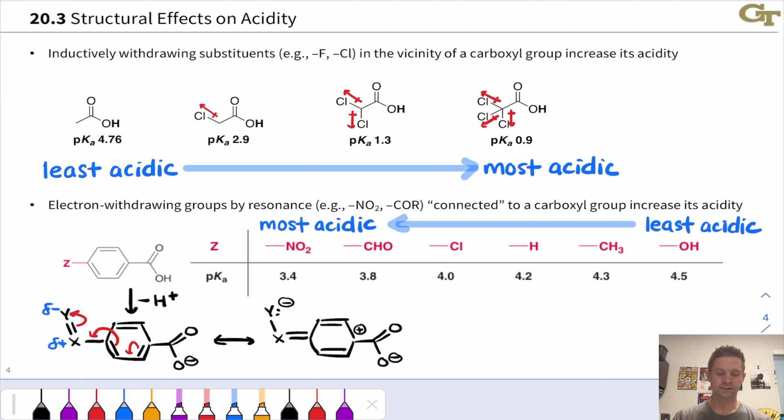A donating group has the opposite effect. Donating groups, resonance donating groups, will put negative charge on this carbon directly linked to the carboxyl group. The close proximity of those like negative charges destabilizes the carboxylate. I encourage you to try this out with a donating group like methoxy or OH or NH2 to understand the effect of electron donating groups.